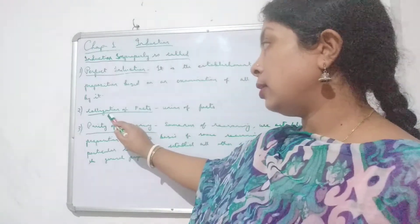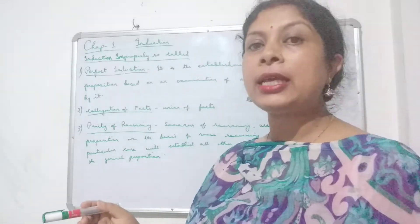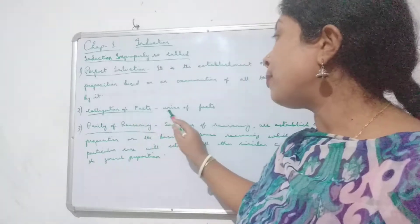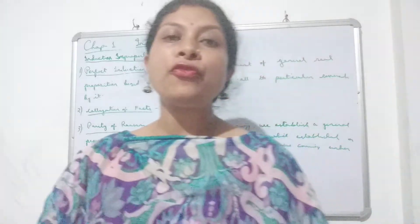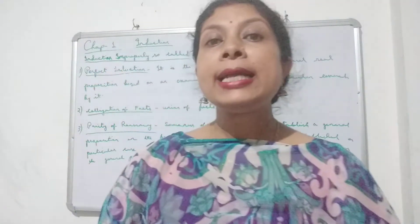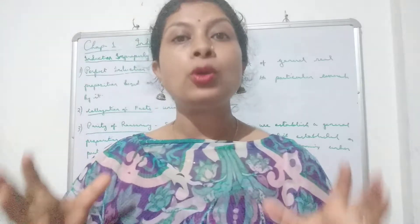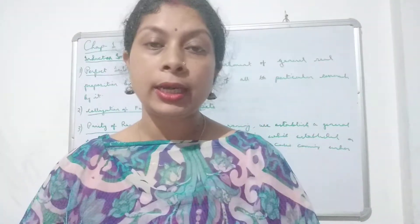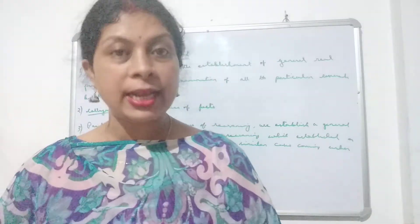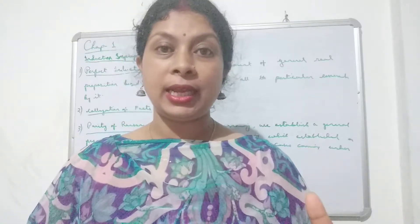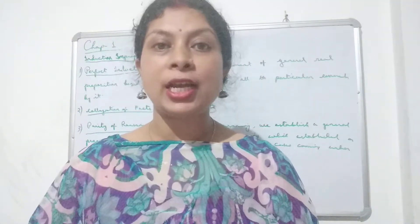Today we will understand what is colligation of facts and what is its meaning. Colligation of facts ka matlab hai union of facts — the meaning of colligation of facts is union of facts. In order to know about any object in this world and give it a name, we need to know about all its different facts — uske saree different facts ke baare meh jaanna padta hai.